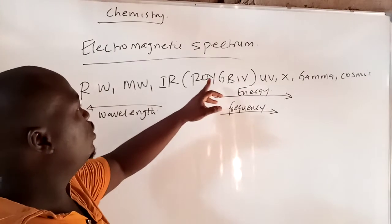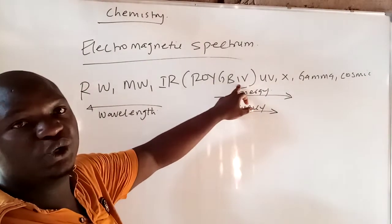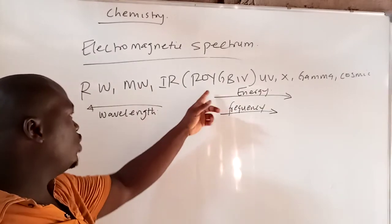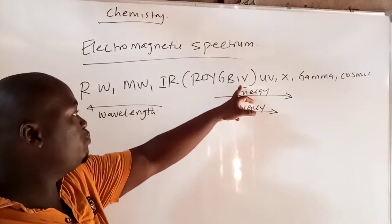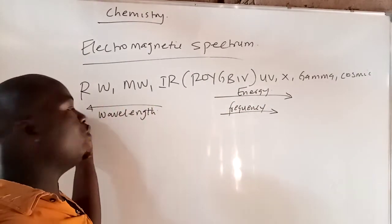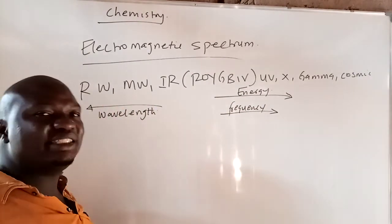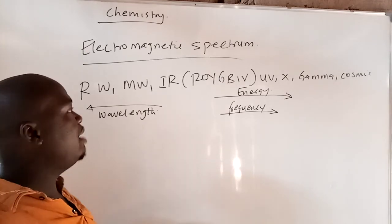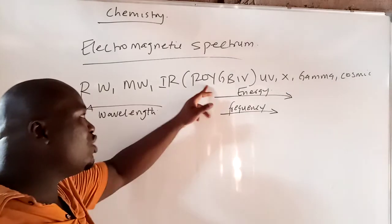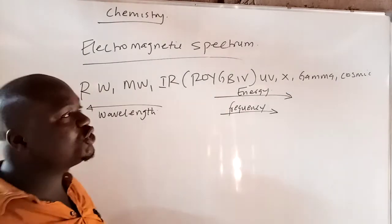Now, between orange and indigo, which one have the highest wavelength? Of course, you can see it's orange. Because you have to pass indigo before you reach. So as you are going towards the microwave side, the wavelength is increasing. Now, between red and yellow, which one have the highest frequency? Of course, it's yellow. So this is so easy, guys.